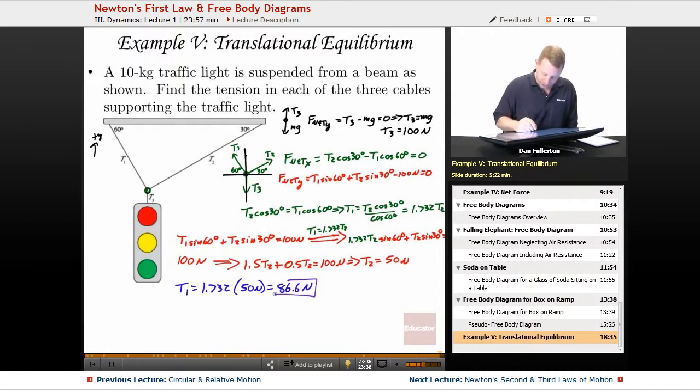So we found the tensions T1, T2, and T3 in our suspended traffic light. All right, hopefully that gets you a good start with Newton's first law free body diagrams and we're going to continue to work on these and evolve them as we go through the course. Thank you so much for your time everyone and make it a great day.